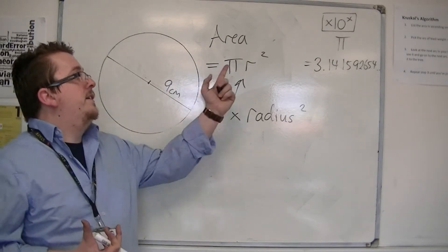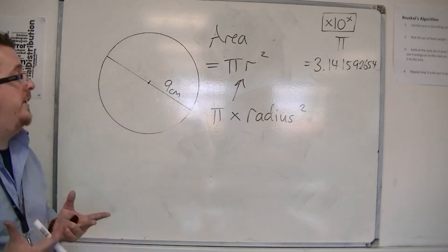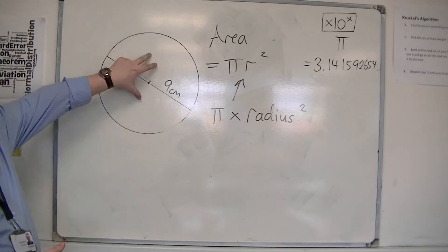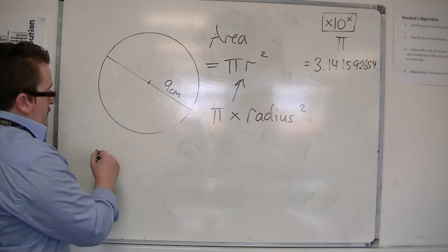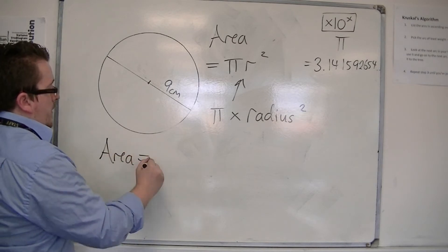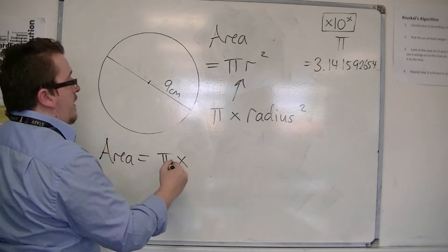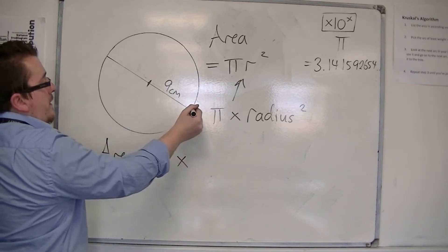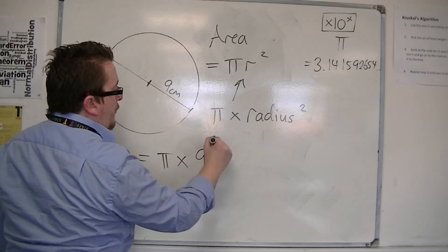There's only one formula to learn, pi r squared. That's all you need to know. So for this circle, if I want to find the area, then I multiply pi by the radius squared. And if the radius is 9, then that's 9 squared.